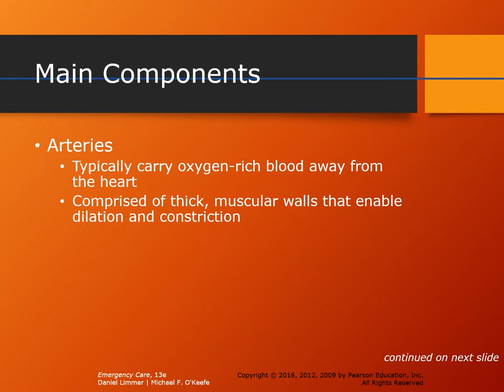Arteries are typically going to carry oxygen-rich blood away from the heart — I say typically because we do have a single artery that moves deoxygenated blood, which is the pulmonary artery. The heart is comprised of thick muscular walls that enable arteries to dilate and constrict on demand, so the body is able to change the diameter of those pipes to increase or decrease the amount of pressure being pushed on the heart.